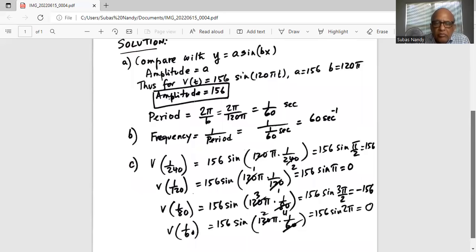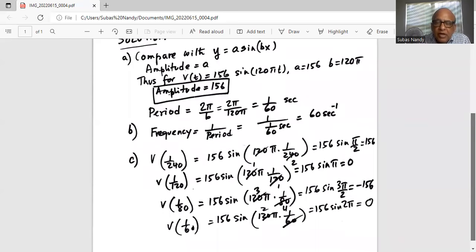What about voltage at 1 over 80? 156 sine 120 pi times 1 over 80. So 40 goes into 80 twice and 40 goes into 120 three times. So it is 156 sine 3 pi by 2. And we know sine of 3 pi over 2 is minus 1. So minus 1 multiplied by 156 is minus 156 volts.